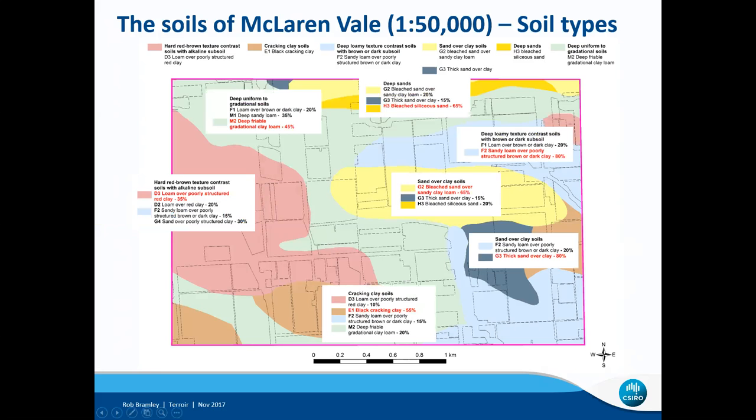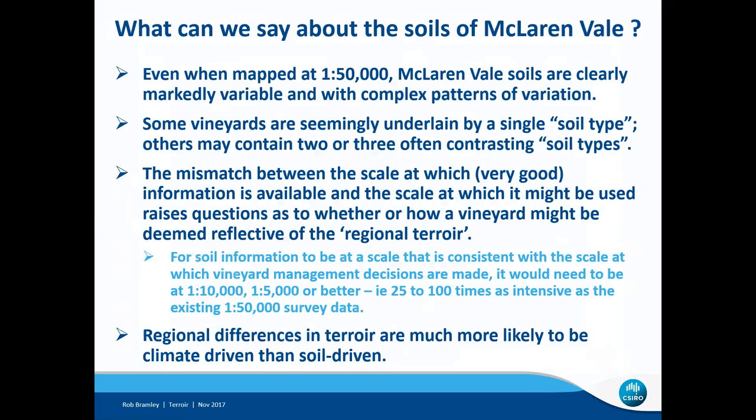So what can we say about the soils of McLaren Vale based just on a brief look at that 5.2 square kilometres? Clearly, even when mapped at 1:50,000 — which is really very good for a reconnaissance soil survey — the McLaren Vale soils are markedly variable with complex patterns of variation. Some vineyards are seemingly underlain by a single soil type and others may contain two or three often quite contrasting soil types. There's a clear mismatch between the scale at which this information is available and the scale at which it might be used to make management decisions or talk about terroir.